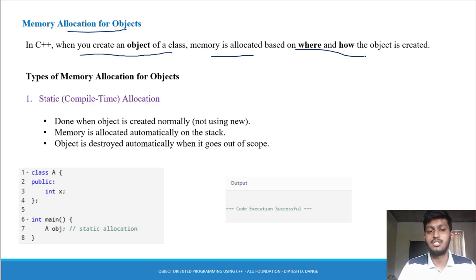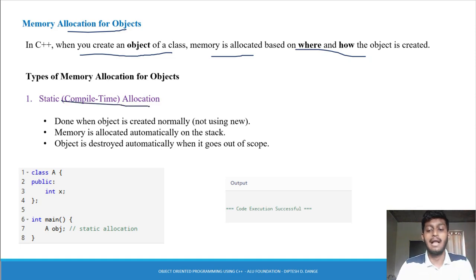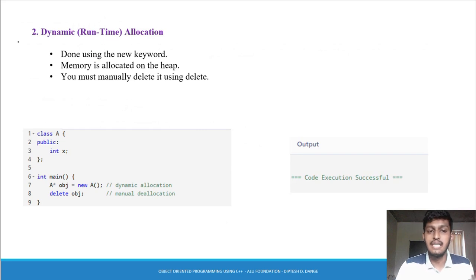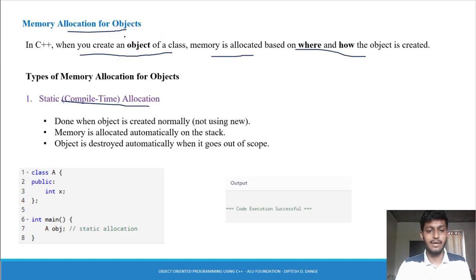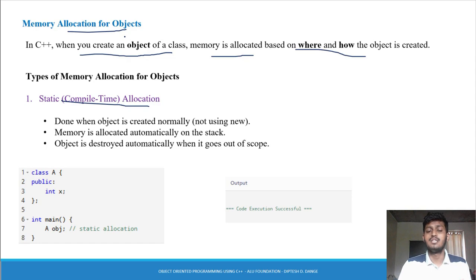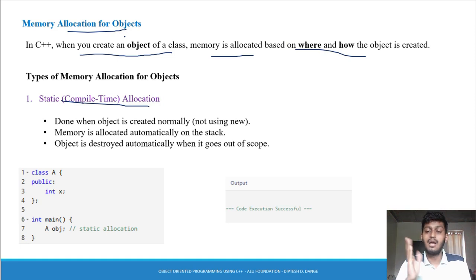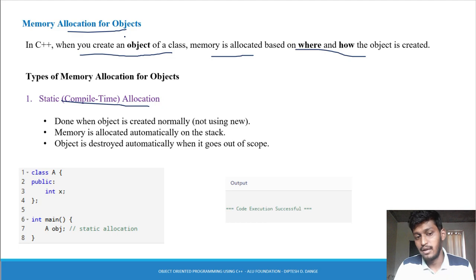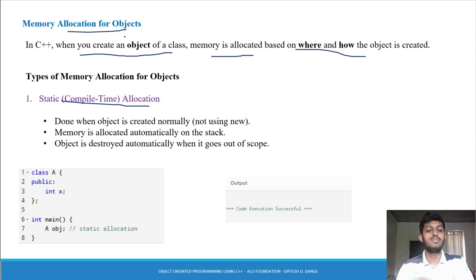There are two types of memory allocation for objects. First one is static allocation — उसका हम कहेंगे compile time allocation. Second one is dynamic allocation — उसका हम कहेंगे runtime allocation. Static allocation is simple allocation — जब तक हमने class के programs किये हैं अब तक, हमने static allocation को use किया है. Class का नाम और object का नाम — this is static allocation.